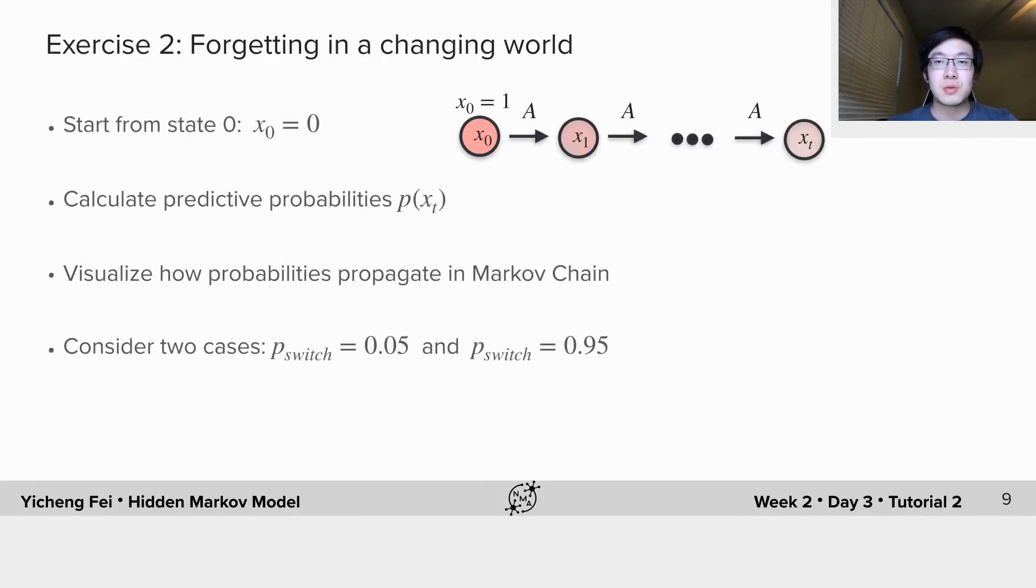In exercise 2, you will inspect how we forget about the initial state over time in a changing world. Using the model you just defined in exercise 1, let's assume we are always in state 0 at the initial time. In this exercise, you will need to complete the code to calculate the predictive probability of xt using the recursion equation just mentioned, as shown here.